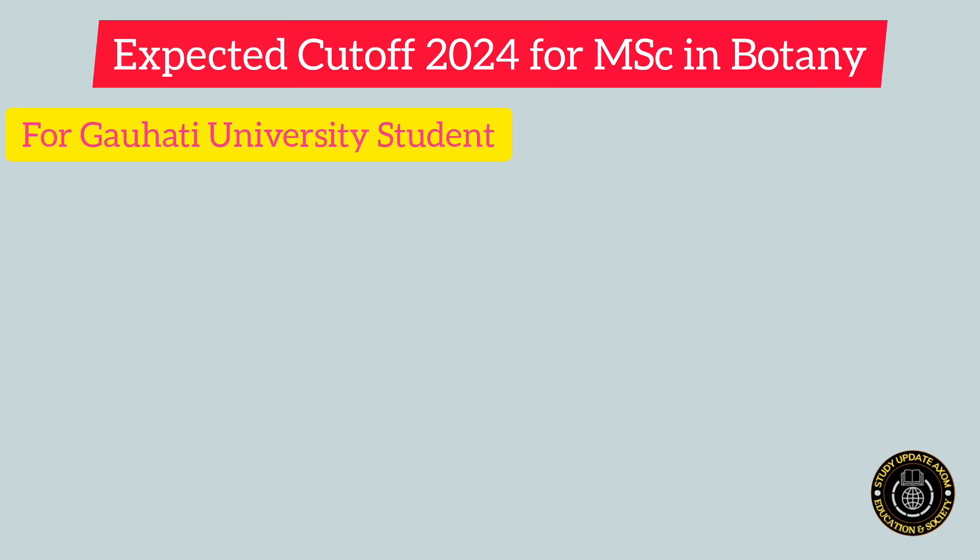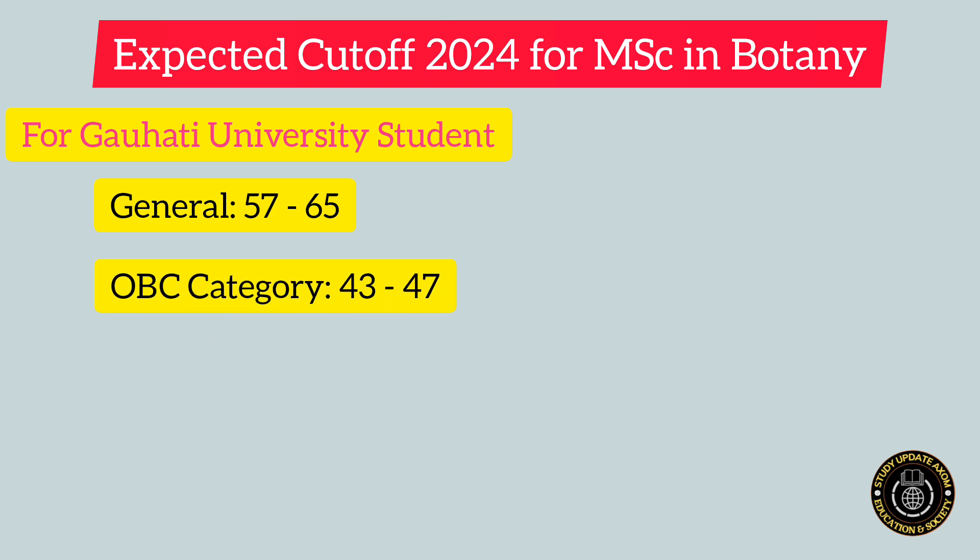The main theme of the video is the expected cutoff. Now let's see what the expected cutoff may be for MSc in Botany for Gauhati University students — the definition of which has already been given in the earlier section. For General category, the cutoff may lie between 57 to 65. For OBC category, the cutoff may be between 43 to 47.